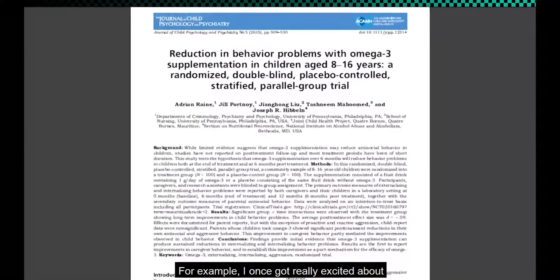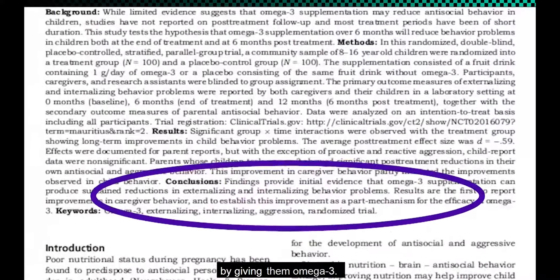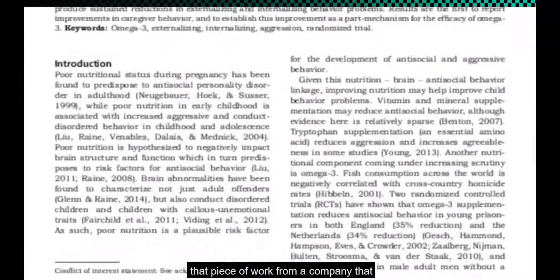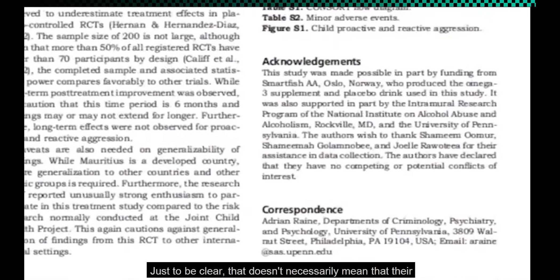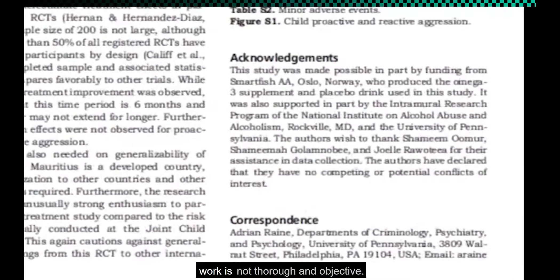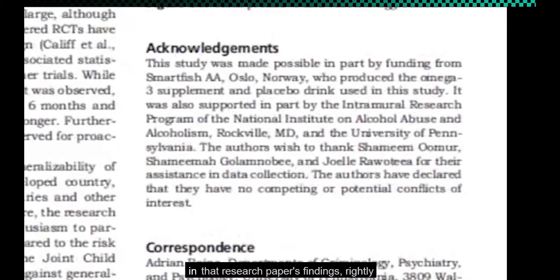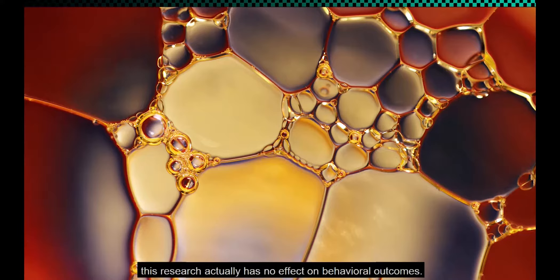For example, I once got really excited about an article which claimed you could reduce behavioral problems in children by giving them omega-3. But then I saw that the researchers got the funding for that piece of work from a company that produces omega-3 oil. Just to be clear, that doesn't necessarily mean that their work is not thorough and objective. But how can I know that for sure? It just causes me not to be completely confident in that research paper's findings, rightly or wrongly, as in my personal opinion, it would have been difficult for the authors to publish a paper saying the product of the company, who had just paid them a lot of money to do this research, actually has no effect on behavioral outcomes.